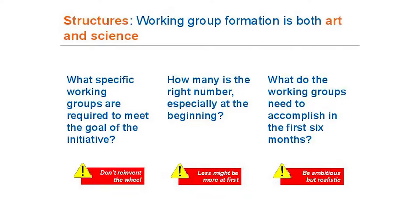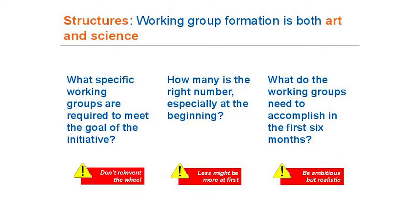Forming working groups is an art, not a science. Key questions: What specific working groups are required to meet the goals of the initiative? What is the scope of the problem? What types of strategies do you have — increased coordination among existing services, policy advocacy, or learning pilots with experimentation and prototyping? Each requires very different types of working groups. Build around your intent, but don't reinvent the wheel — build on existing successes.